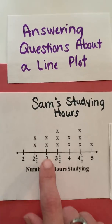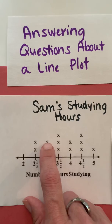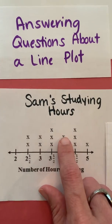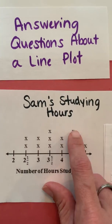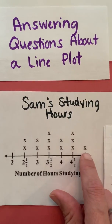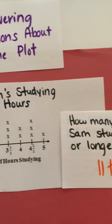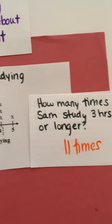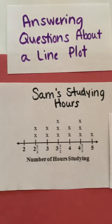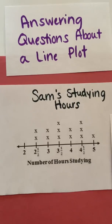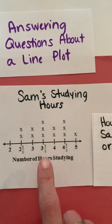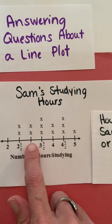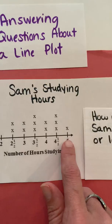Counting the X's at three hours and beyond: 1, 2, 3, 4, 5, 6, 7, 8, 9, 10, 11. So he studied 11 times for three hours or longer. You could also use skip counting: 3, 6, then 8, 10, 11.